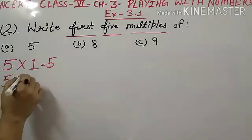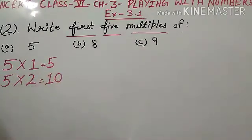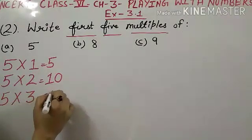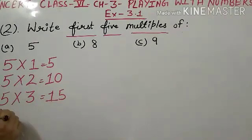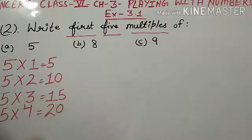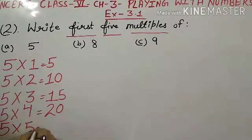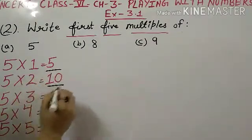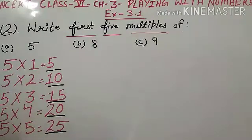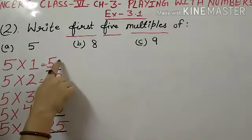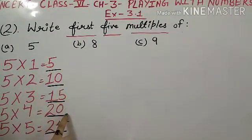Then 5 multiplied by 2 is equals to 10. This is the second multiple. 5 multiplied by 3 equals to 15. 5 multiplied by 4 equals to 20, and 5 multiplied by 5 equals to 25. So, these are the first 5 multiples of 5: 5, 10, 15, 20 and 25.